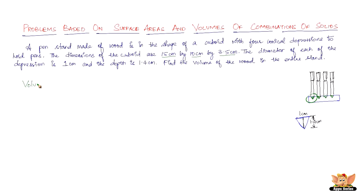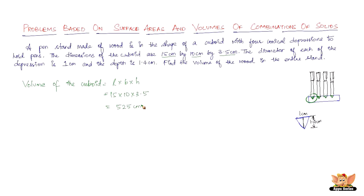First, let's find the volume of the cuboid. Volume of the cuboid is length × breadth × height, which is 15 × 10 × 3.5 = 525 cm³. So the volume of the cuboid is 525 cm³.